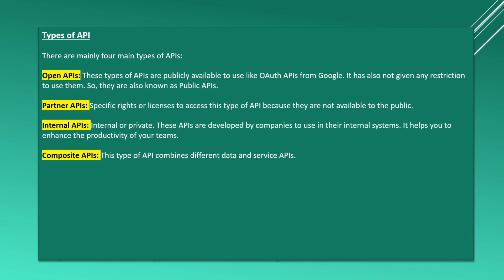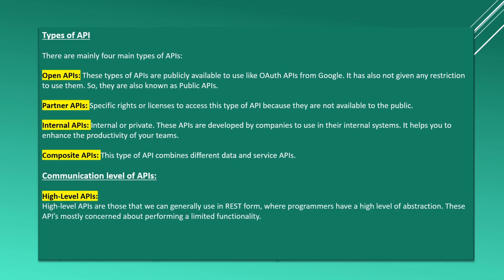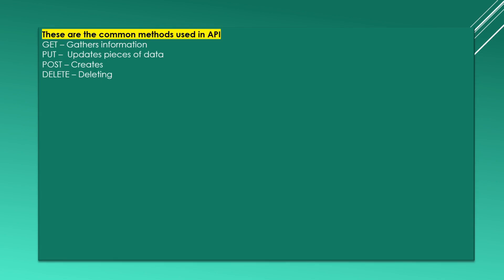Let's understand the communication levels of API. There are two types: one is high level and another is low level. These are commonly used for HTTP requests.